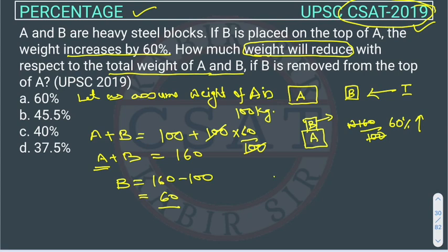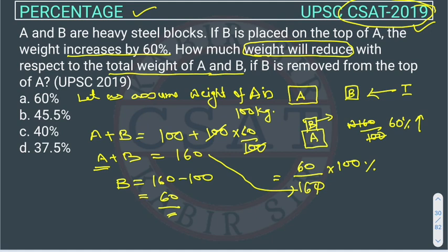We have the weight of B. How much weight will get reduced? B's weight will get reduced. B's weight is 60, and the total weight of A and B is 160. We have to calculate in percentage: 60 divided by 160, multiplied by 100. This 0 cancels, then from 4 we cancel, giving 25. Then from 2 we cancel, giving 75 by 2 percent, or 37.5 percent.